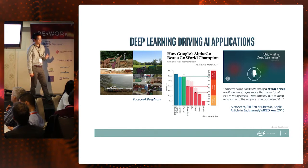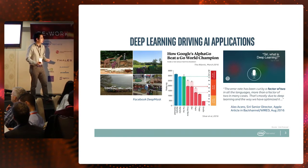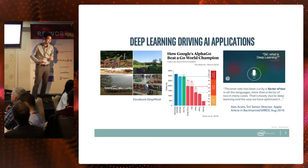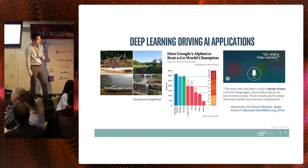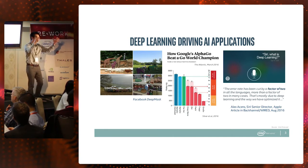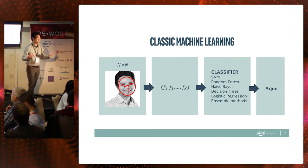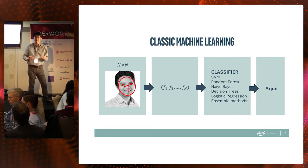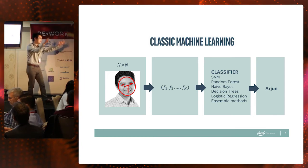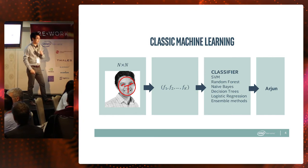I want you to start by understanding what deep learning is and how it is conceptually different from classical machine learning. In classical machine learning, you would take an image — say of my boss here, Arjun — which is an n-by-n pixel space, and use domain knowledge of how faces differ from each other, such as distance between the eyes or between the eyes and the nose, to bring that image down into a smaller set of features. You would then apply classical machine learning algorithms to take that set of features and identify that this is Arjun. The key here is the feature engineering part.